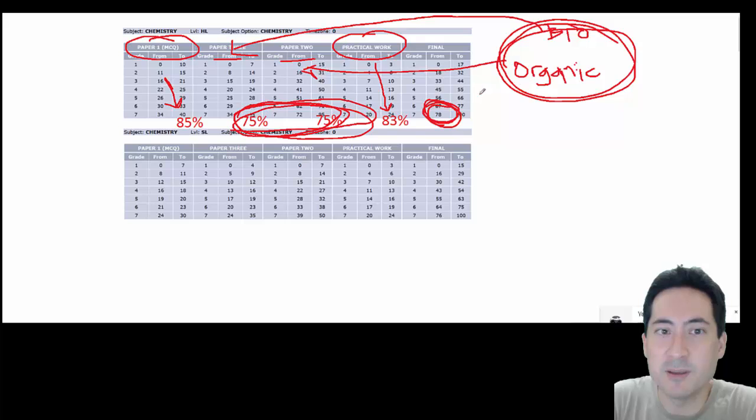Don't worry about paper one. Worry about your paper, you worry about your topic 10 organic and your biochemistry options. The other options, well, option A is actually a little bit harder, I think, like mathematically. And people do so well on this because there's lots of practice. All right, so just do lots of practice questions.